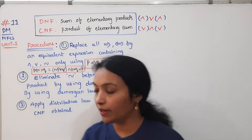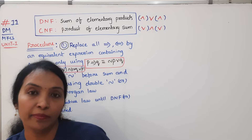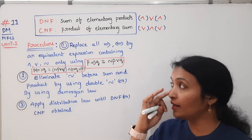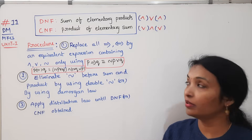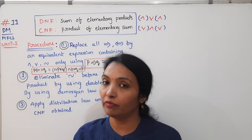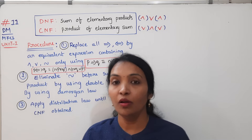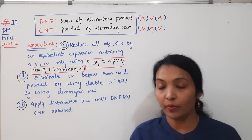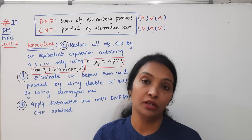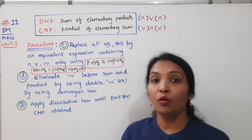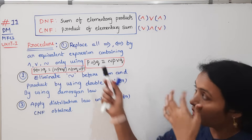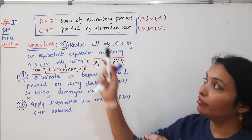Hi, all of you. Welcome back to Rama Reddy Mass Academy. This is the 11th lecture in our Unit 1. This is the first class on what is the WFFL formula? What is the DNF CNF?